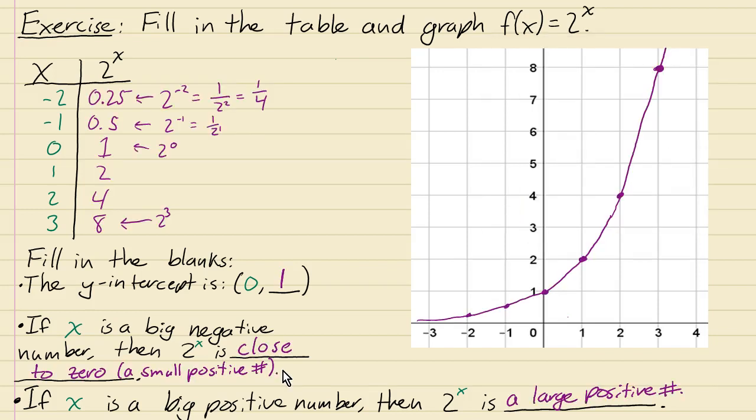Here's my answers. So a few things. Two to the power zero. Well, anything to the power zero is always one. So that gets you this point here, which is actually the y-intercept, is the point zero, one.